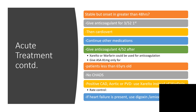Xarelto or warfarin could be used for anticoagulation. You can give aspirin if the patient is older than 65 years and there is no CHA2DS2 score. The CHA2DS2 score is what we use to determine the risk of stroke.